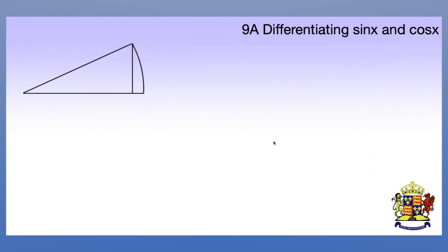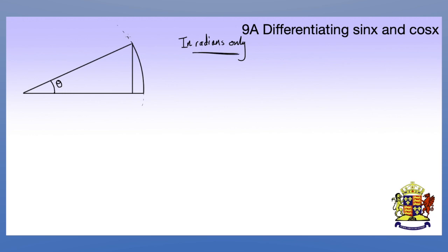Now thinking about our small angle approximation — I'll quickly go through where these come from just to remind you. If we start with part of this unit circle, thinking about very very small angles, I put my angle of theta in here. Just to quickly remember, we are in radians. This does not work in degrees, and the reason for that is that this arc length here is theta radians.